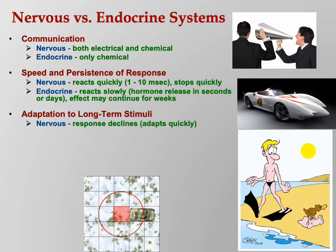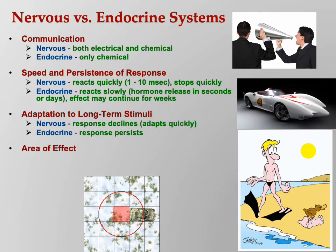With respect to adaptation, the nervous system response declines quickly — like adaptation to smell or adaptation to darkness; your sensory organs adapt very quickly. Endocrine response persists much longer. Think again of bodybuilders using steroids: once they stop, they don't shrivel up overnight and go back to normal. It's days or weeks before they go back to normal. So again, long-term effects of the endocrine system.